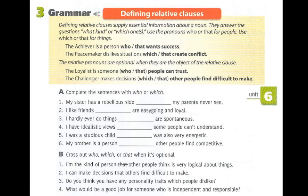Let's do the exercises. Complete the sentences with 'who' or 'which.' Number one: 'My sister has a rebellious side which — or that — my parents never see.' We use 'which' to replace 'a rebellious side.' Is the relative pronoun optional here? Separating the sentences: 'My sister has a rebellious side' and 'My parents never see my sister's rebellious side.' Yes — the relative pronoun is optional: 'My sister has a rebellious side my parents never see.'